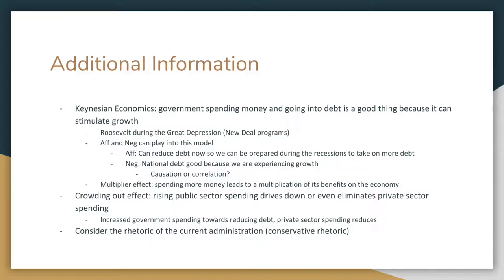Another important economic theory is the crowding out effect — essentially, rising public sector spending drives down or even eliminates private sector spending. You can argue that increased government spending towards reducing the debt reduces overall spending done by the private sector. This is exactly what you would argue for NEG: if the private sector is the most important driving factor of the economy, then by affirming you're spending more on reducing the national debt, the private sector isn't investing, which means reducing the national debt could essentially create another recession.